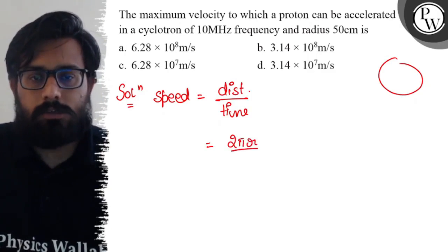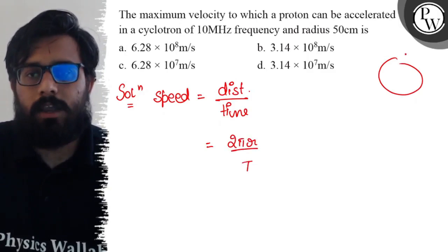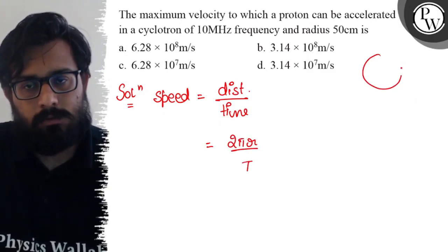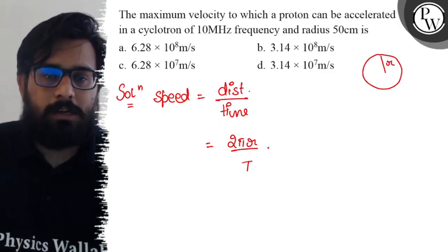the distance covered by it is 2πr, and the time taken will be the time period T. So the distance covered in one round is 2πr, and the time taken equals the time period.